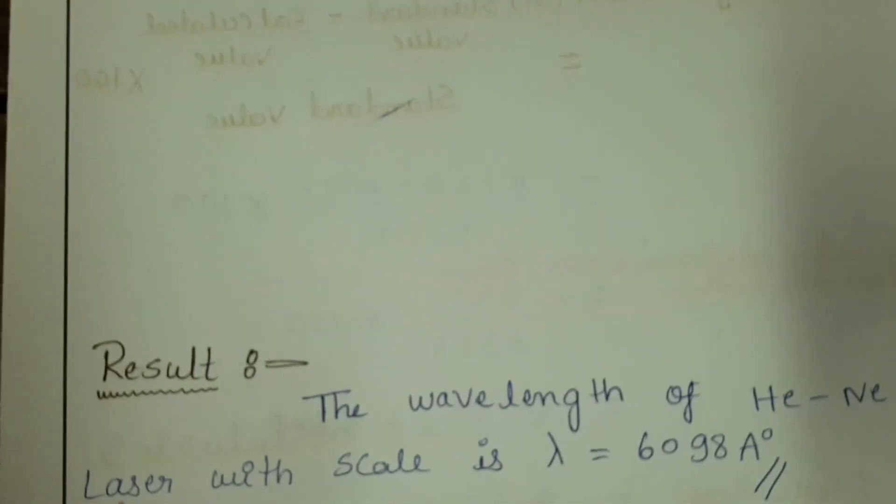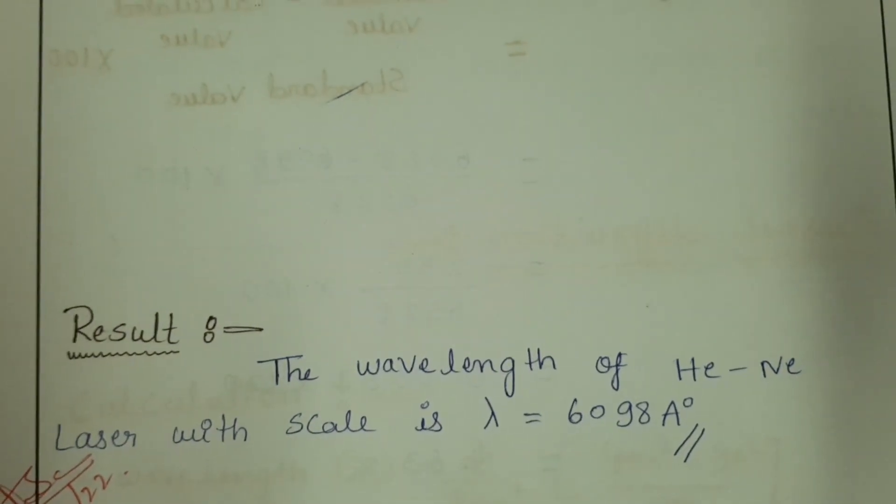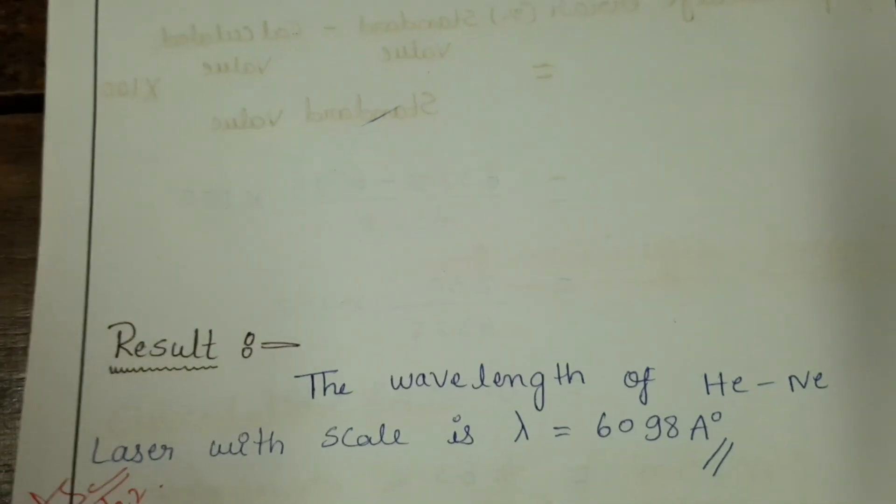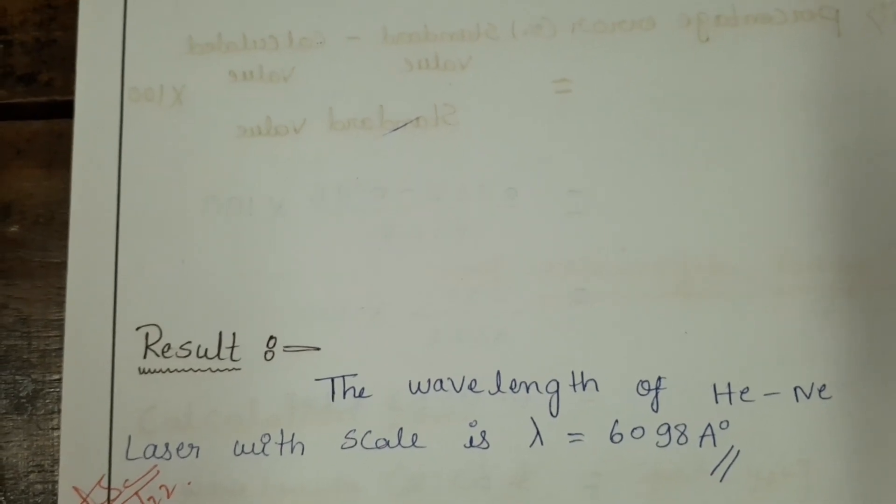Finally, the result is: the wavelength of the given helium-neon laser by scale method is 6098 angstrom. Hope this video is helpful for you. Thank you for watching.